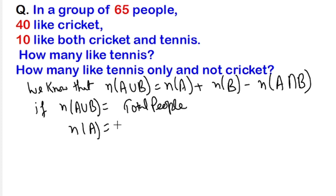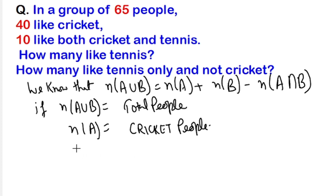n(A) is the first class of people — that is, the people who like cricket. So the cricket people are considered here as n(A). Similarly, n(B) is the number of people who like tennis.